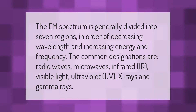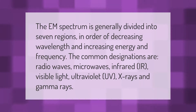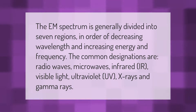The electromagnetic spectrum is generally divided into seven regions, in order of decreasing wavelength and increasing energy and frequency. The common designations are radio waves, microwaves, infrared (IR), visible light, ultraviolet (UV), X-rays, and gamma rays.